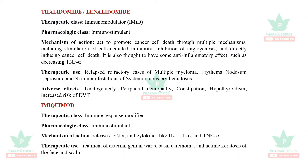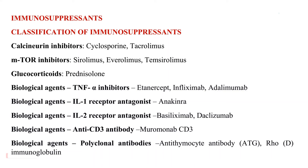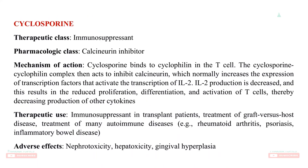Immunosuppressants — this is a very important topic. Classification: calcineurin inhibitors — cyclosporine and tacrolimus; mTOR inhibitors — sirolimus, everolimus; glucocorticoids; and biological agents including TNF-alpha inhibitors (etanercept, infliximab, adalimumab), IL-1 receptor antagonist (anakinra), IL-2 receptor antagonist (basiliximab, daclizumab), anti-CD3 antibody (muromonab), and polyclonal antibodies — antithymocyte antibody and Rho immunoglobulin.